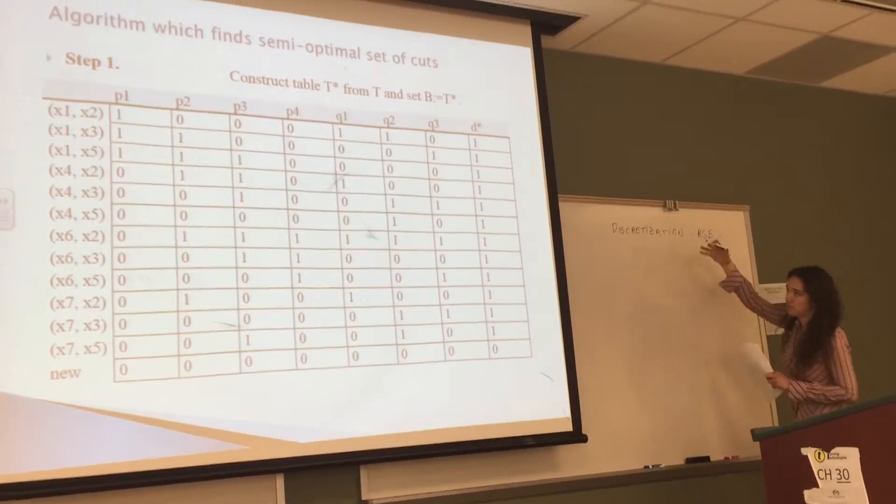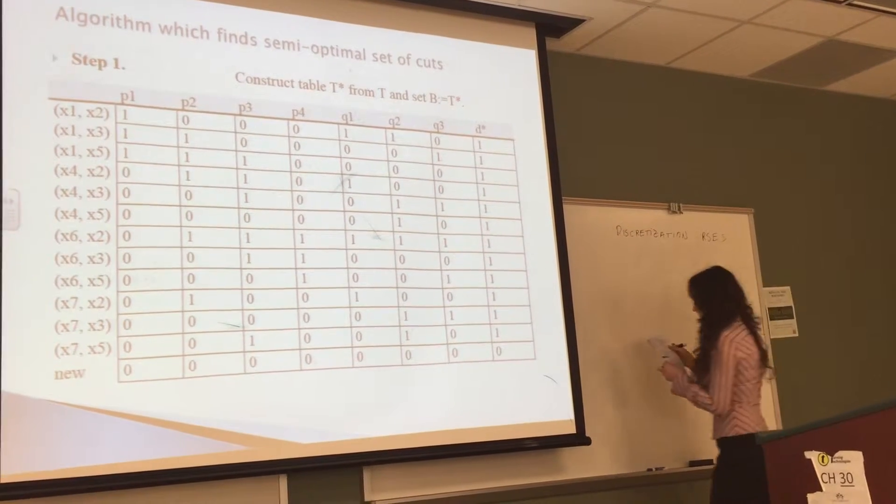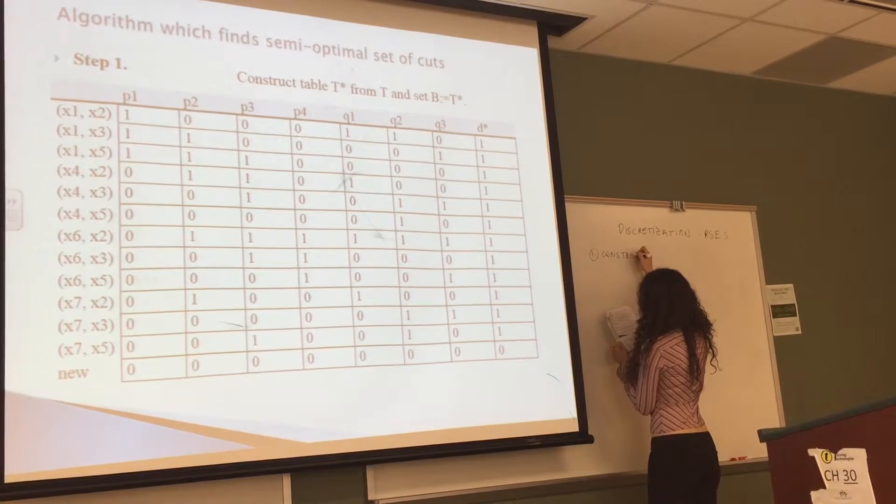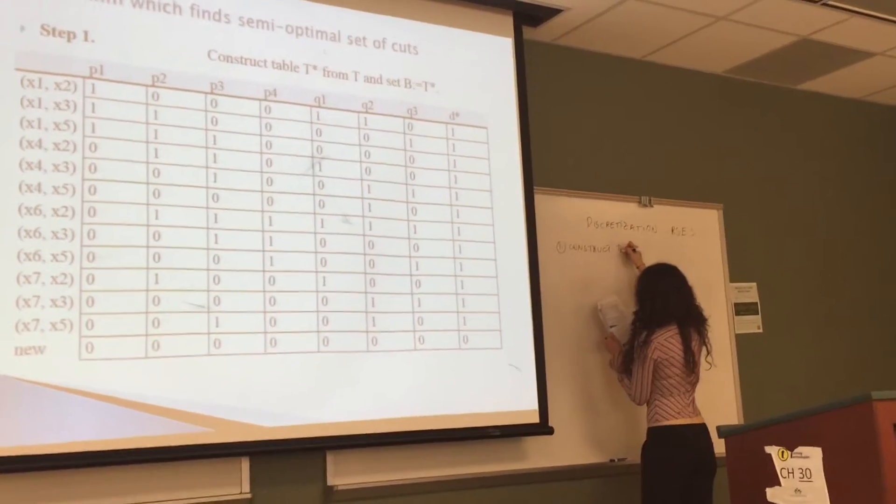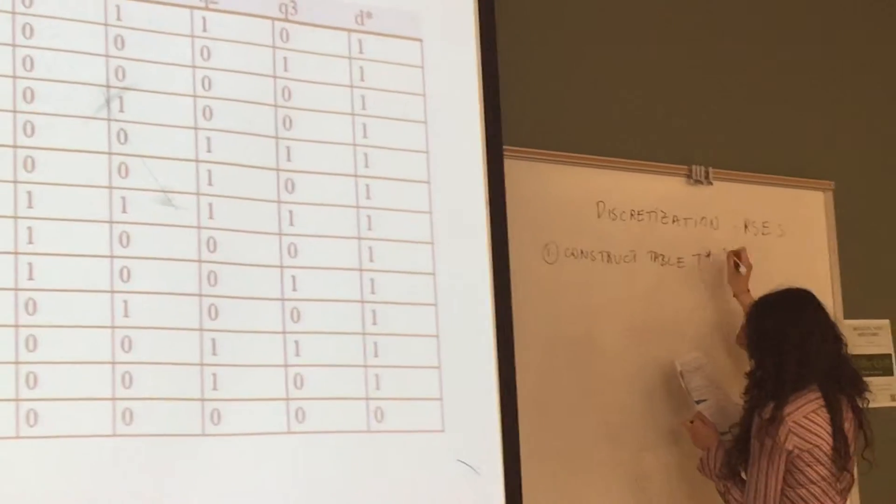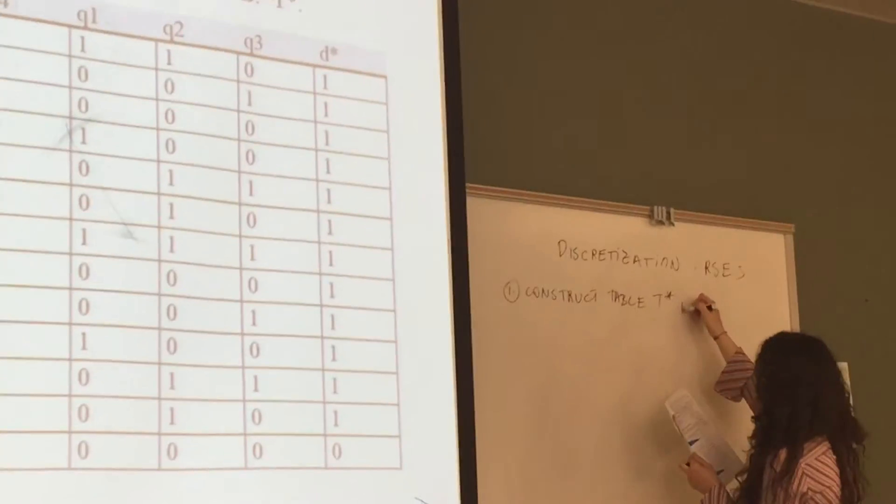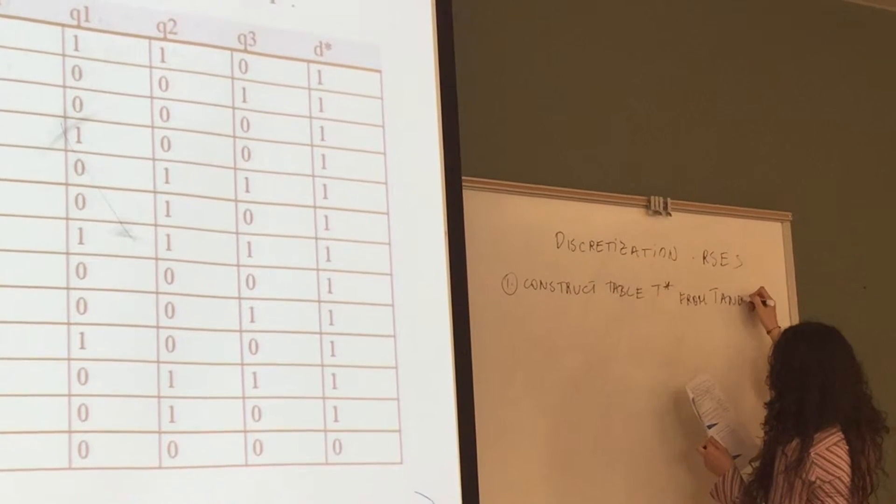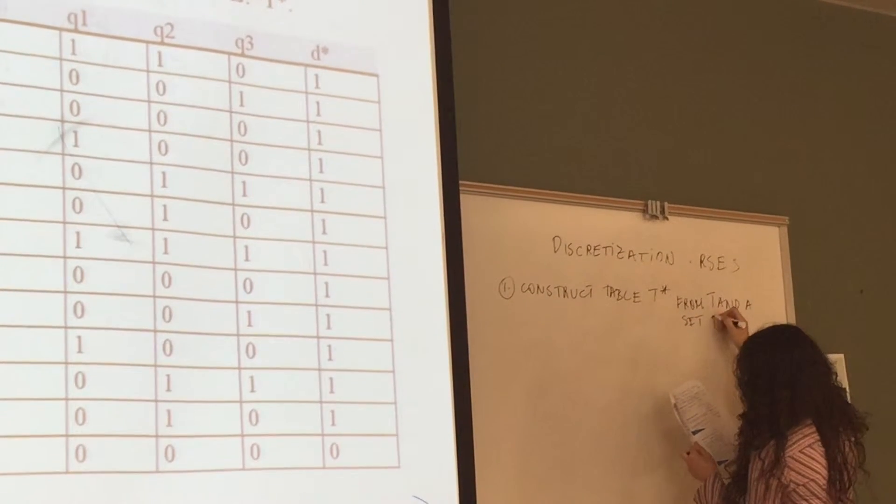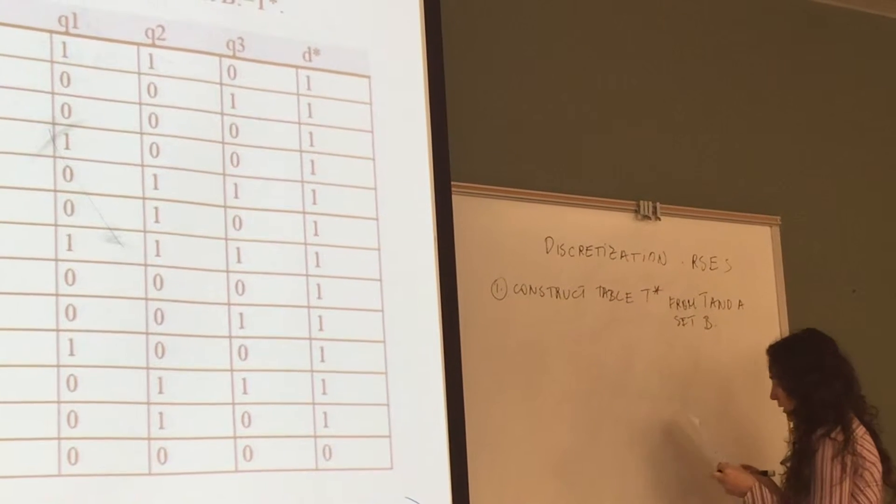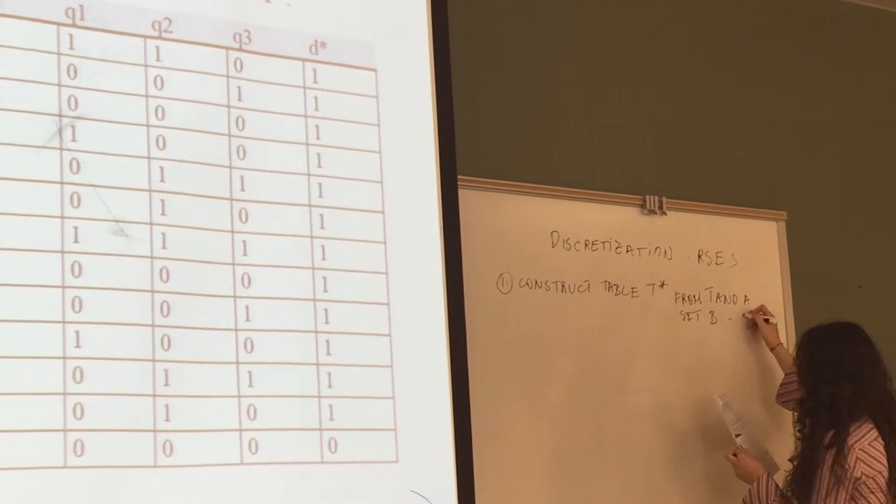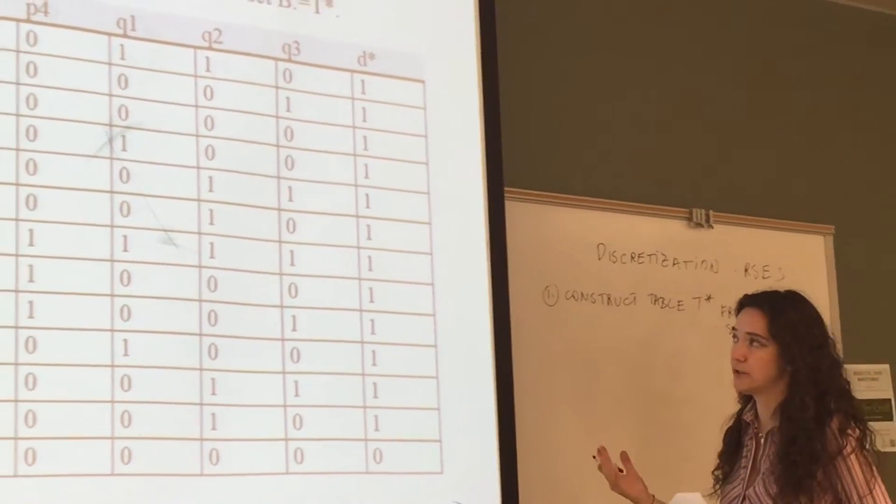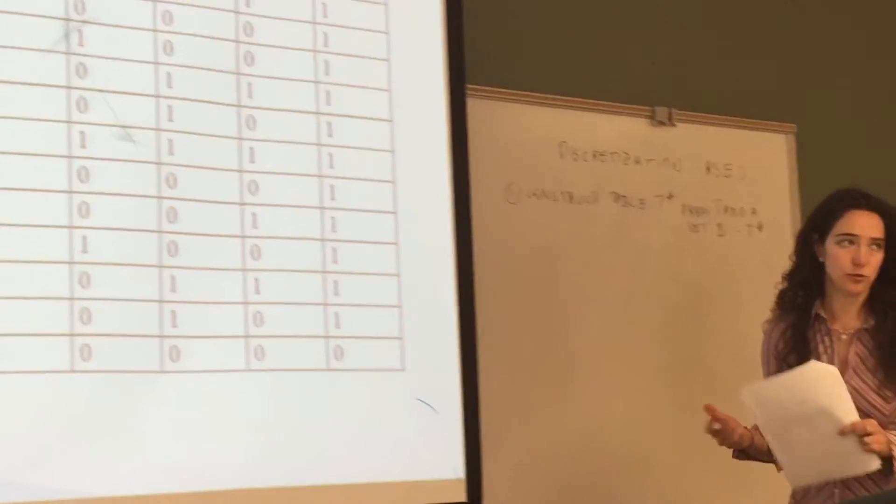It's going to create this binary table. Construct table, we call it T star from the original table and a set B, which is a binary table. If the cup is used, it's a 1. If the cup is not used, it's a 0.